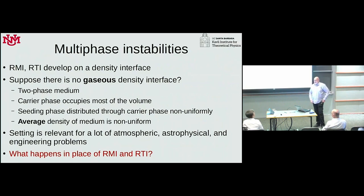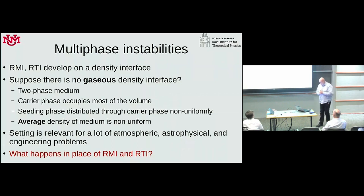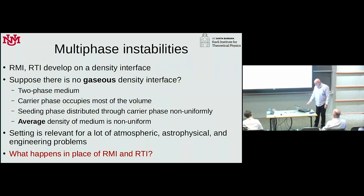What happens if instead of an interface in density — two gases, for example — you have an interface in average density? So instead of a volume filled with one gas and a volume filled with a different gas, you have a volume of gas and a volume of the same gas, but seeded with particles or droplets. This is very relevant for quite a bunch of problems. Does anything happen, and what do we need to understand about what happens in place of Rayleigh-Taylor and Richtmeyer-Meshkov instability?